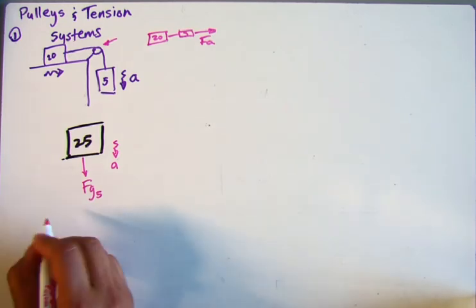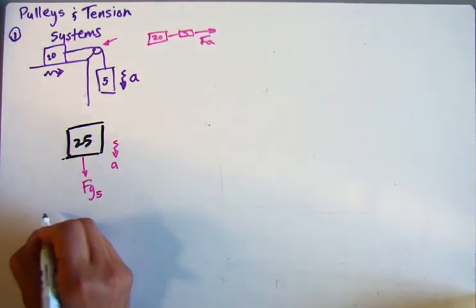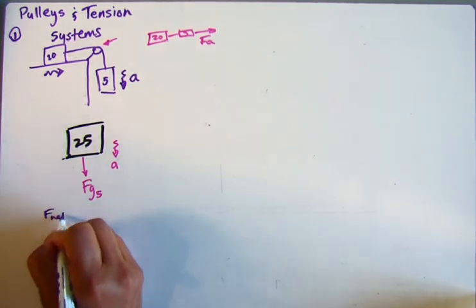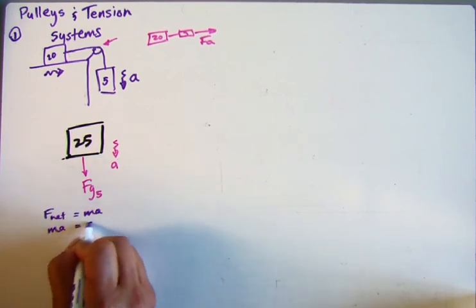So we can solve this, because we can say we can go back to this idea that F net equals MA. MA equals the sum of the forces.